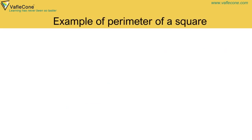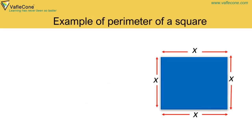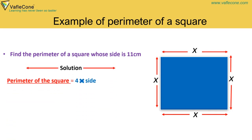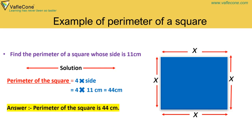Example: Find the perimeter of a square whose side is 11 cm. Solution: Perimeter of the square = 4 into side = 4 into 11 cm = 44 cm. The perimeter of the square is 44 cm.